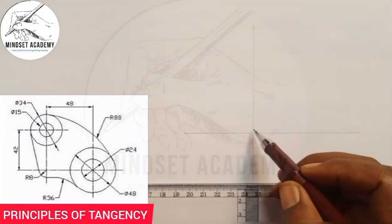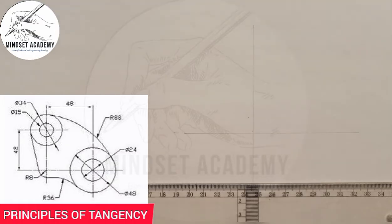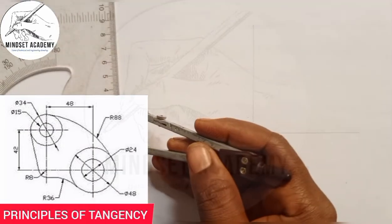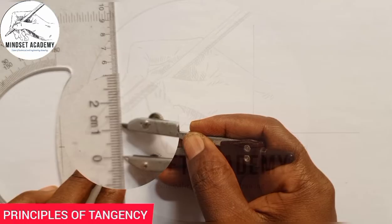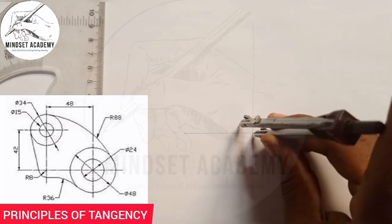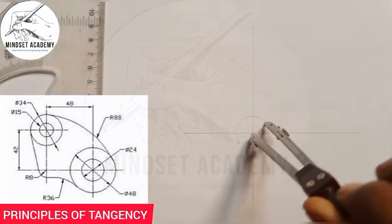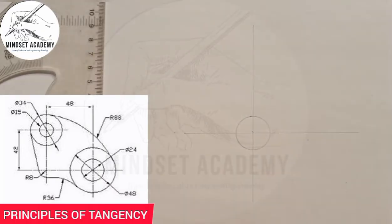Here is the key point my arrow is pointing to. The inner circle has a diameter of 24, so with tangency we operate with the radius. I will measure half of 24, which is 12, from 0 to 12. I'll place it at the center point and draw the inner circle.